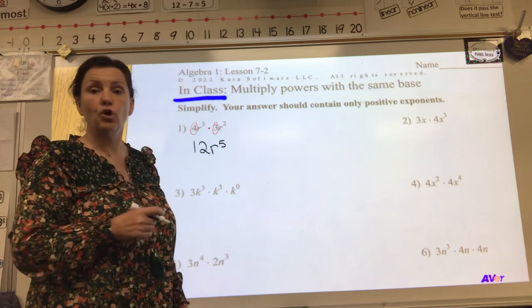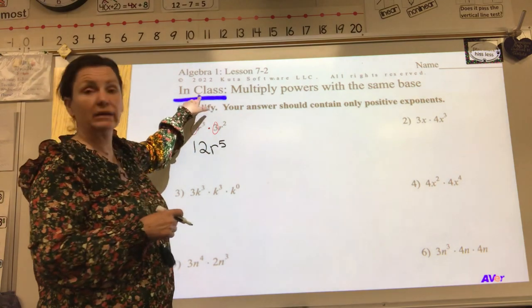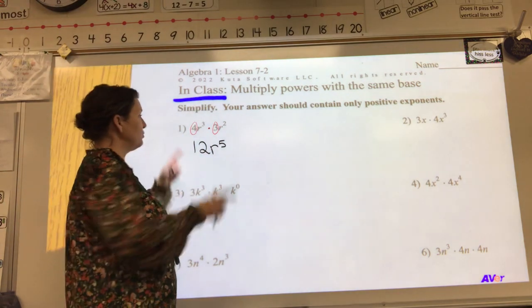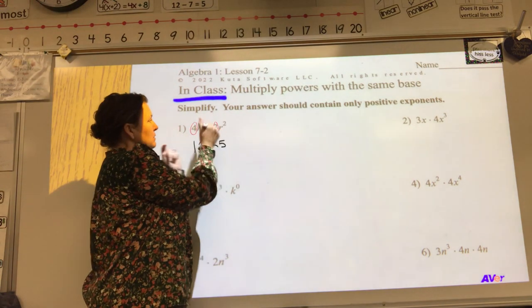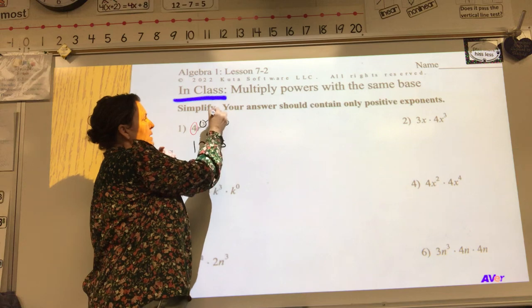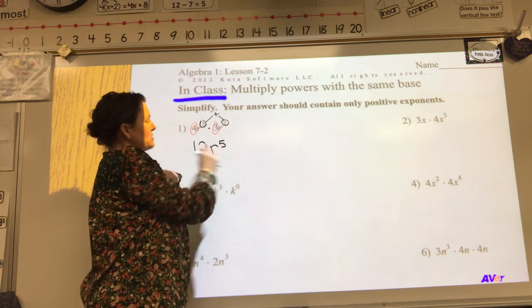There's also a separate homework worksheet, and that one will say homework in here instead of in class. So what do we do? We multiply the front guys, and we add our exponents when they're like bases. Three plus two was five.